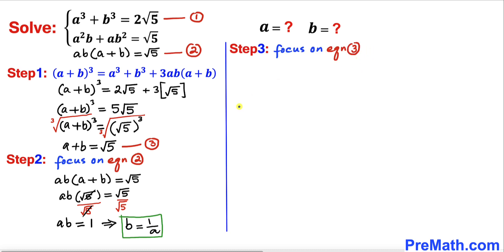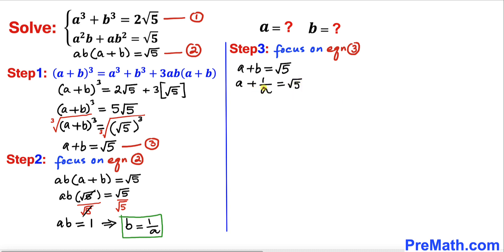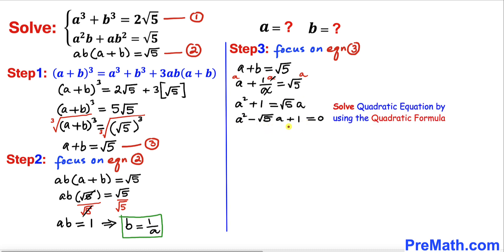Now let's focus on equation three. Since b = 1/a, we can substitute to get a + 1/a = √5. Multiplying through by a, we get a² + 1 = √5 · a, and rearranging gives us a quadratic equation: a² − √5·a + 1 = 0, which we will solve using the quadratic formula.